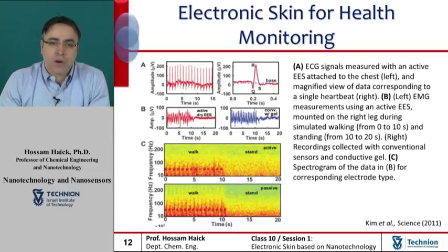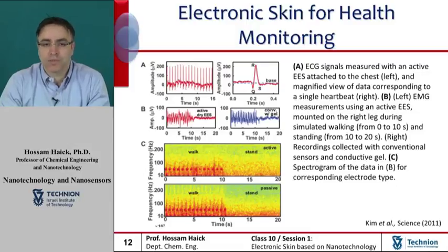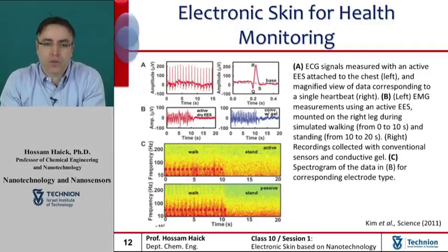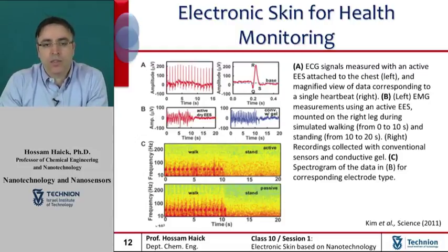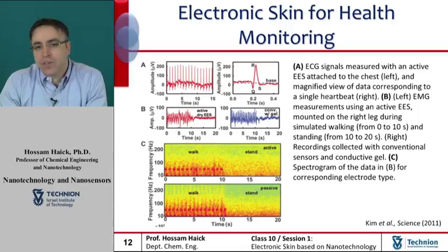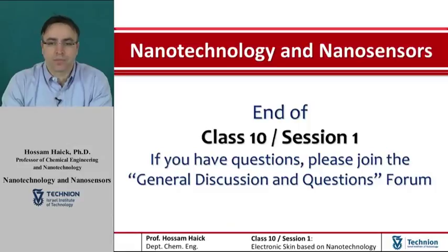An additional example of electronic skin for health applications includes ECG recordings from the chest, which have revealed high-quality signals with information in all phases of the heartbeat, including rapid depolarization of the cardiac wave and the associated signal complex, as seen in figure A. Electromyography (EMG) measured on the leg with muscle contractions to simulate walking and resting is shown in figure B. An alternative view of the data is shown in figure C, where the spectral content appears in a color-contour plot with frequency and time along the y- and x-axis respectively. This concludes class number 10, session number 1.